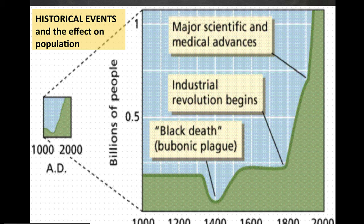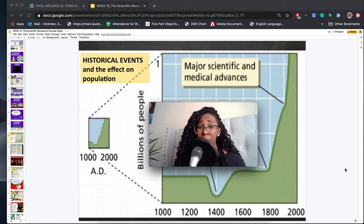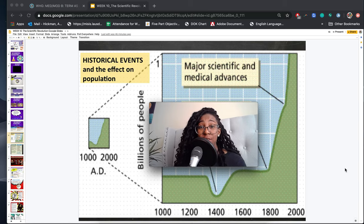This graph should look familiar — we talked about the Black Death and the effect it had on population. Thanks to scientific and medical advances, the population goes up even more over time. Inventions like antibiotics allow people to stay alive longer. These major advances all start with the scientific revolution.